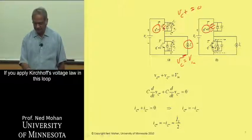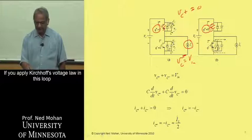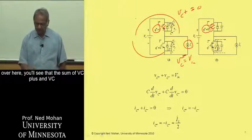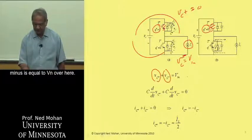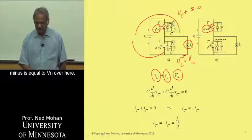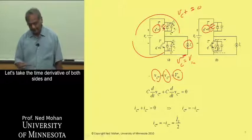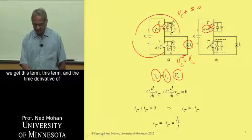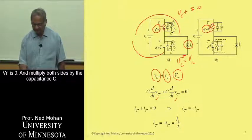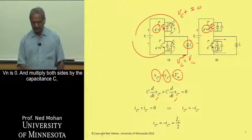that if you apply Kirchhoff's voltage law in this loop over here, you'll see that the sum of VC plus and VC minus is equal to VN over here. Let's take the time derivative of both sides, and we get this term, this term, and the time derivative of VN is zero.